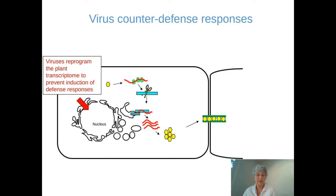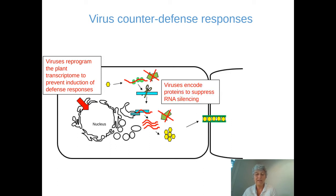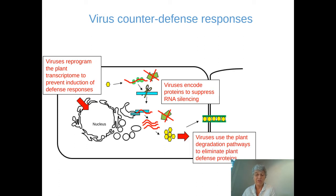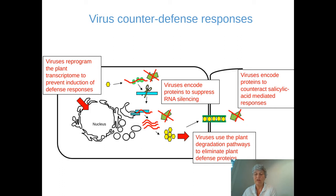The virus counterattacks the plant with counter-defense responses. Viruses have a way to reprogram the plant transcriptome to prevent the induction of defense responses. They also encode proteins to suppress RNA silencing and prevent the degradation of viral RNA or the repression of translation. Viruses have learned to use the plant degradation pathways to eliminate plant defense proteins — using the plant's own defense response against the plant. Viruses also encode proteins to counteract salicylic acid-mediated responses, and many of these things can happen simultaneously, so there are multiple layers of plant-virus interaction.